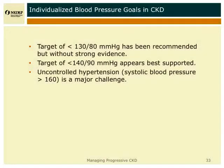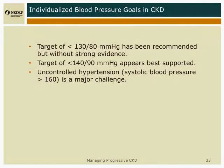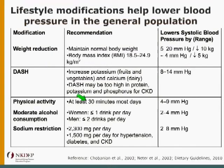Blood pressure goals have traditionally been, at least the last 10 years since JNC-7, 130 over 80. This is really not based on very good evidence. The consensus now is that the evidence really supports 140 over 90. Regardless, the major issue is people with really uncontrolled high blood pressure.